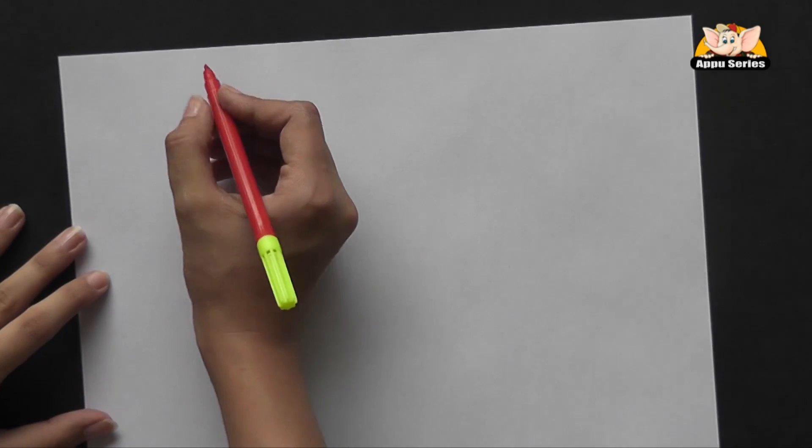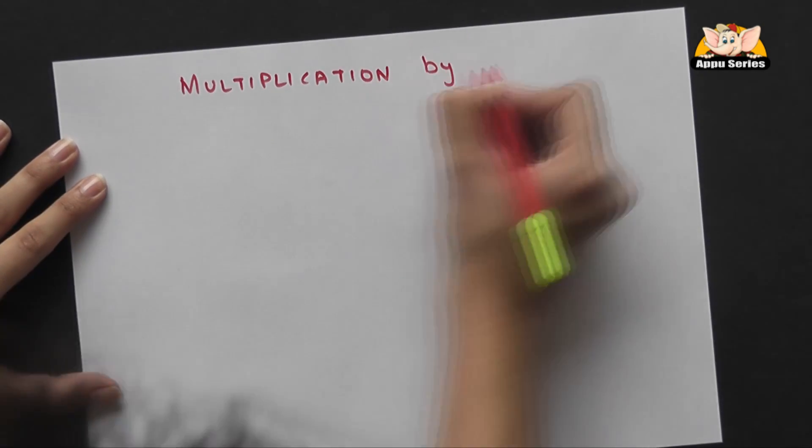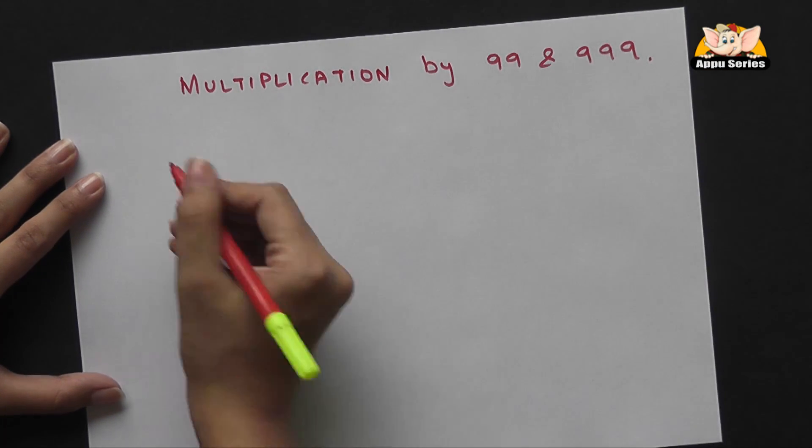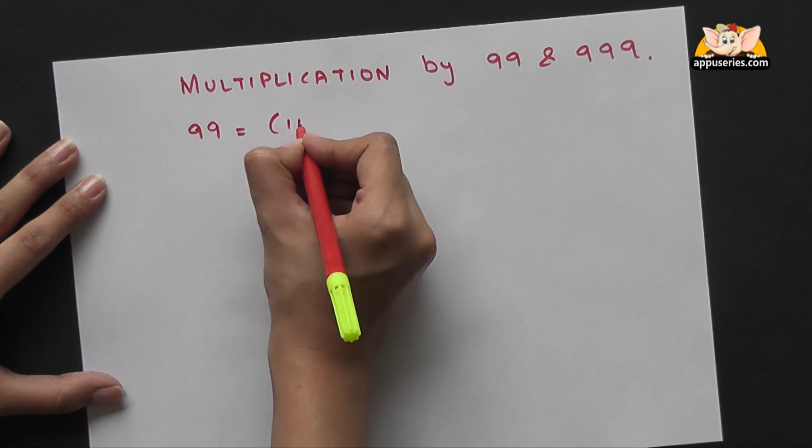Now that we know the fastest method to multiply by 9, we'll learn multiplication by 99 and 999. We'll be using the same concept. So 99 is nothing but 100-1.